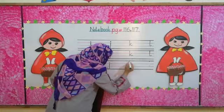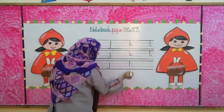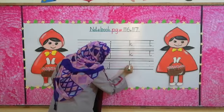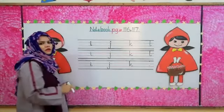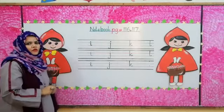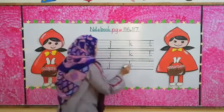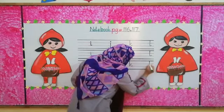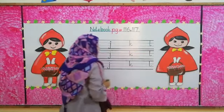First of all, we will make a straight line like this. Now we will join these dots like this. This is letter K, and the sound of K is K. Now we will write L, and the sound of L is L.